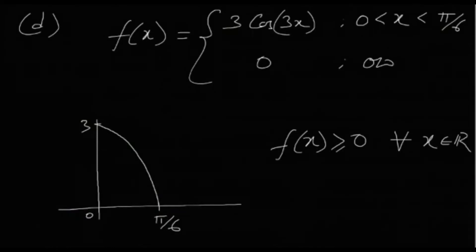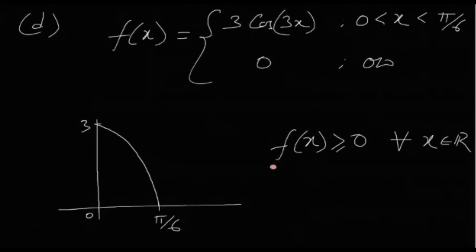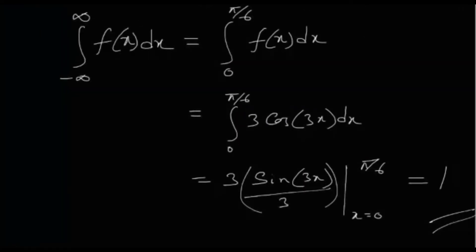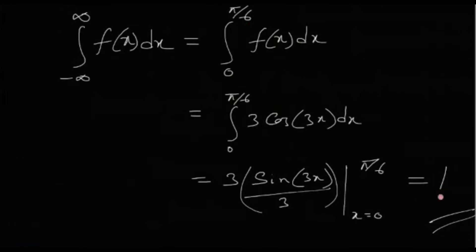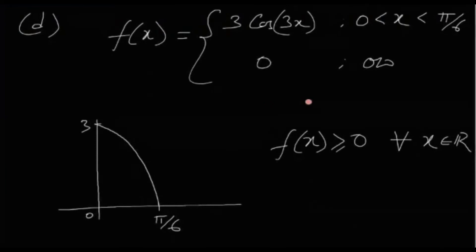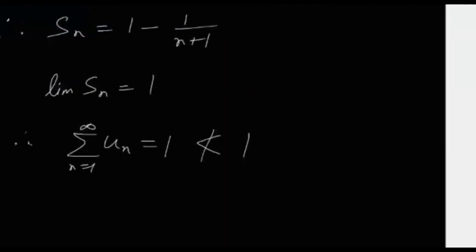For the second condition, we integrate over all reals: ∫f(x)dx = ∫₀^(π/6) 3·cos(3x) dx = 1. Both conditions hold — f(x) is non-negative and integrates to 1 — so f(x) is indeed a valid probability density function. Option D is true.